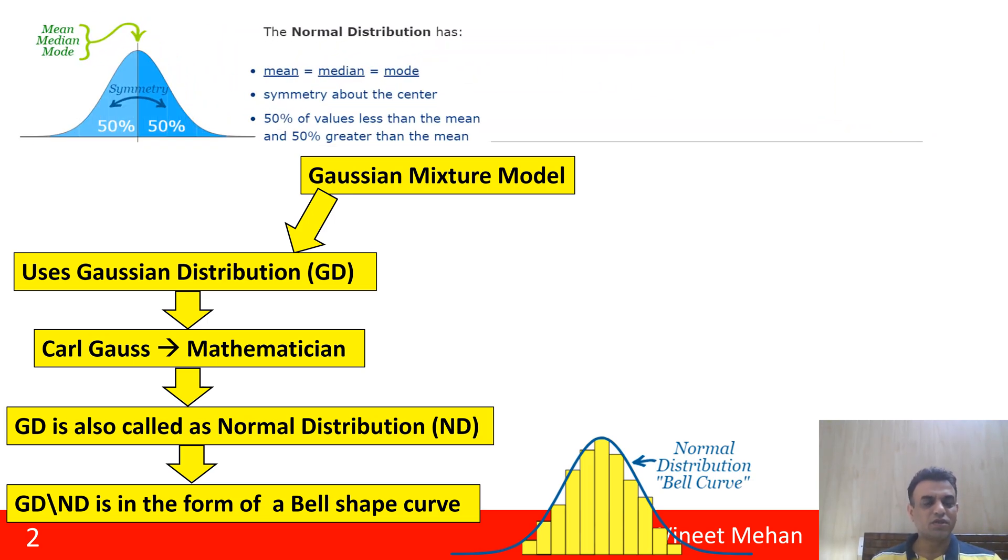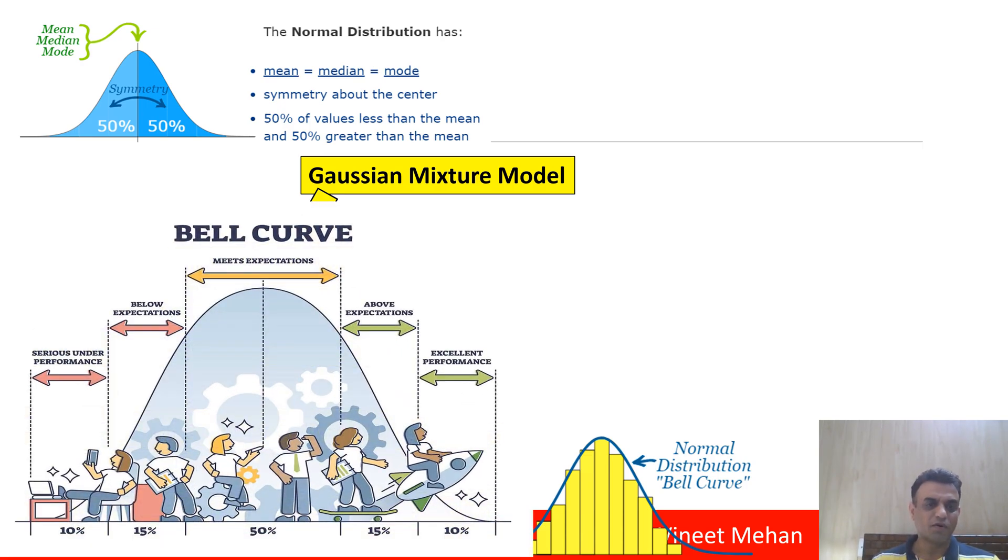Now you could see this diagram of Normal Distribution or Gaussian Distribution. Here the mean, median, and mode are all the same - that means there is symmetry about the center. Fifty percent of values lie below the mean and fifty percent lie above the mean.